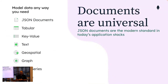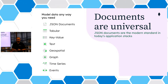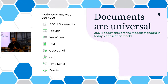Documents in MongoDB are really universal. We support many different types of data structures within the document itself. JSON documents are maybe the first thing that comes to mind, but we can also support tabular data and key-value pairs — common in the NoSQL world where you have a key, such as your username, and the value is the actual username. That's the way you store data in a key-value pair.